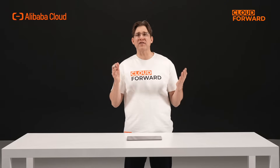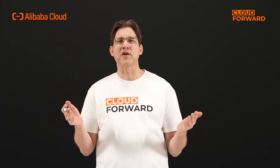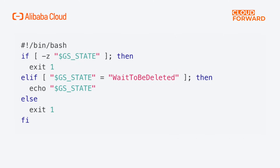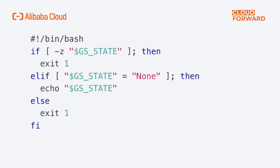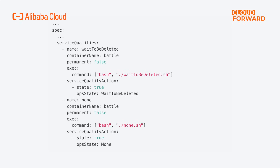Therefore, a mechanism is needed to mark the business status on the Kubernetes object — the game server — and this is the customized service quality function. Customized service quality automatically marks the room server state on the game server based on the results of executing detection scripts and corresponding state set by the user. There is a state detection script named WaitToBeDeleted.sh, which detects whether the value of the GSState environment variable in the container is WaitToBeDeleted, with a corresponding game server set YAML. There can also be multiple custom service qualities; for example, when the room server needs to reveal its None state, the script named None.sh is used with its corresponding game server set YAML.